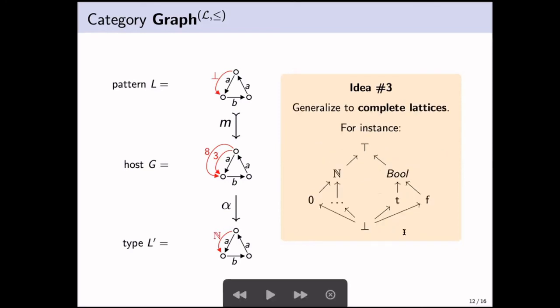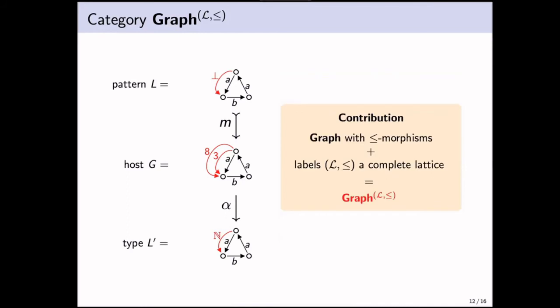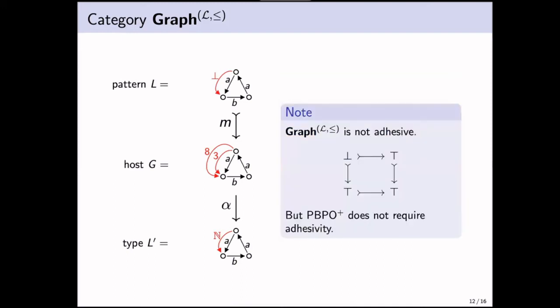Then you can generalize this idea to complete lattices, so we can have a kind of type hierarchy as depicted here. This edge for instance will only allow edges labeled with numbers to be mapped into it. And then our contribution is that we introduce graph with these less equal morphisms where the labels form a complete lattice. Note that this category is not adhesive. This square over here is a pushout along a mono because the join or supremum of top is top, but it's not a pullback because the meet would have to be top as well. But for us, this is not a problem because PBPO+ does not require adhesivity.